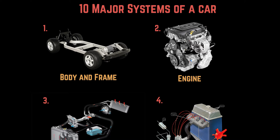Number two: the engine. The engine provides power to the vehicle. It's made up of a metal block that holds all of the other engine parts together in an assembly, like we just talked about. The engine has pistons that move up and down to combust a controlled explosion to propel a car into motion.